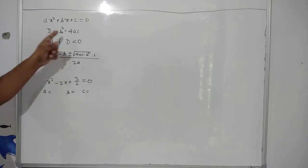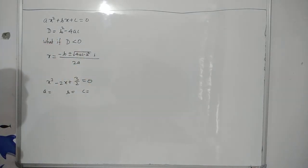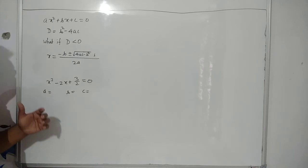So, instead of b square minus 4ac, you will use 4ac minus b square iota. So, now let us take an example.